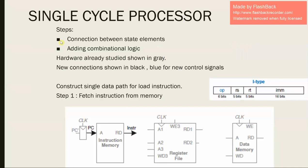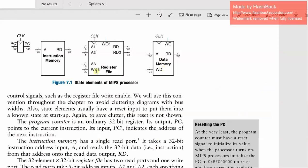The first step involves the connection between state elements. Before going into detail, we'll see what the different state elements are for a MIPS processor. There are four of them: the program counter, instruction memory, register file, and data memory. Three of them have clock pins to synchronize, and two of them have write enable pins — that pin decides whether to read or write. Also, the memory is divided into two sections: instruction memory and data memory, which helps in better understanding how both work.